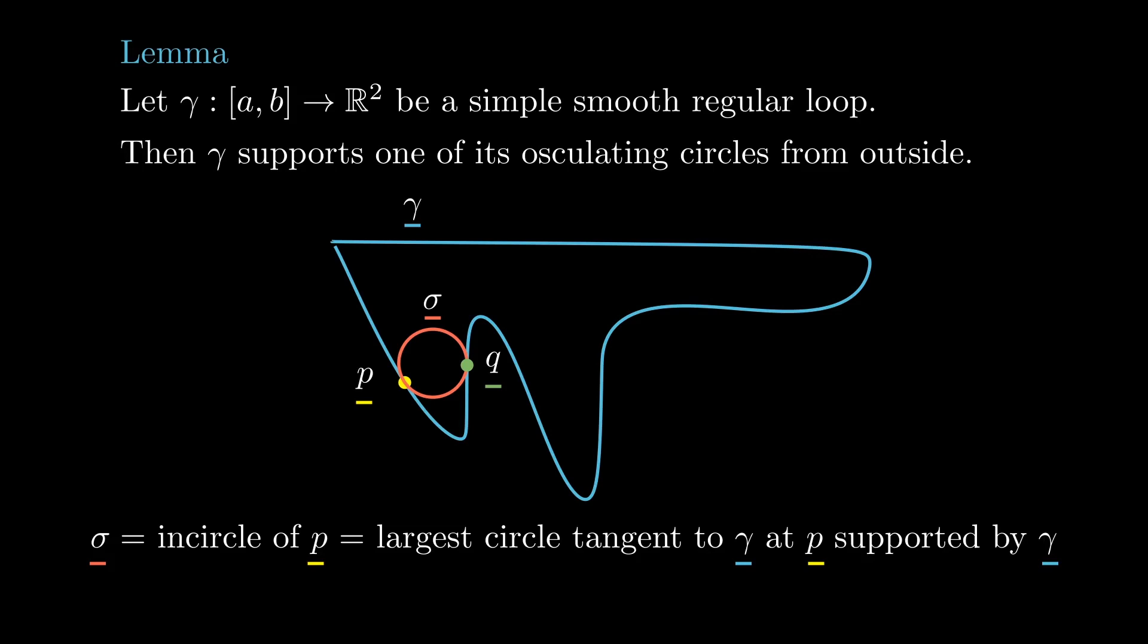Working by contradiction, we can assume that for each p in the curve other than the base point, its in-circle gamma is not the osculating circle of gamma at p. This means that the signed curvature of sigma p is strictly greater than the one of gamma at p.